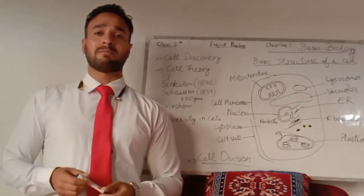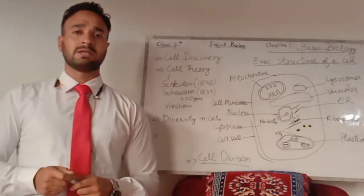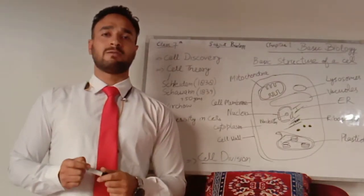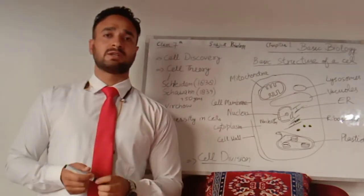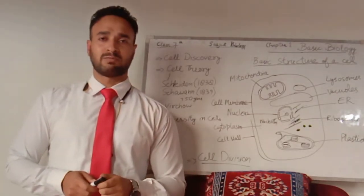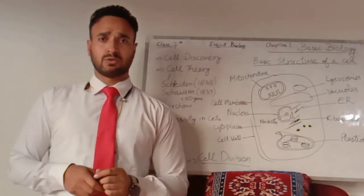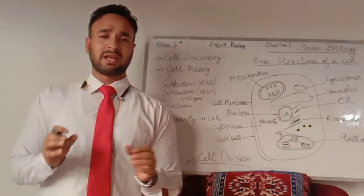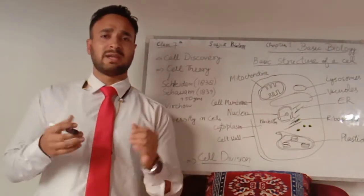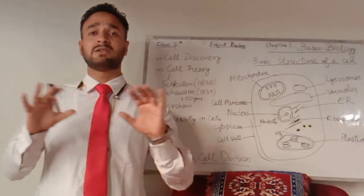There was a person named Anton van Leeuwenhoek. He was a Dutch scientist and the first person to invent a simple microscope. Through this microscope he found that there are so many small organisms present in a droplet of water, but he did not name them.